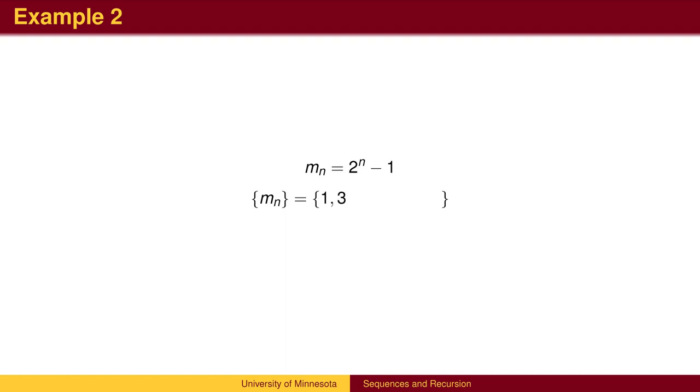Plugging in 3, we get 2 cubed minus 1, which is 7. Continuing on, we get 15 as the fourth term, and 31 as the fifth.